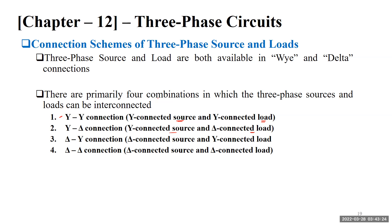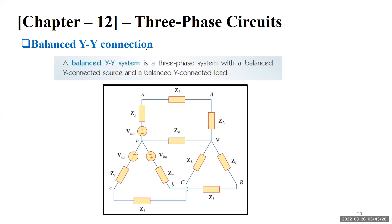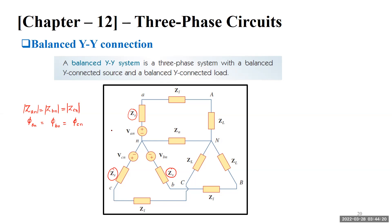The first case is a balanced Y-Y connection. A balanced Y-Y system is a three-phase system with a balanced Y-connected source and a balanced Y-connected load. A balanced three-phase source is one in which all the phase impedances are equal in magnitude and phase: Z_an = Z_bn = Z_cn, and the phase angles are also equal.